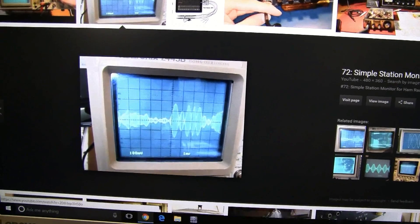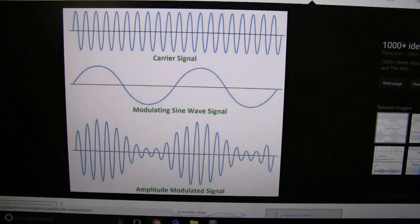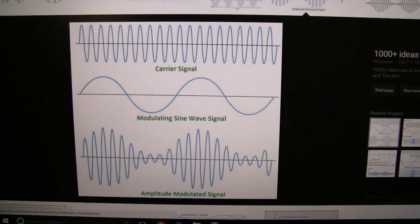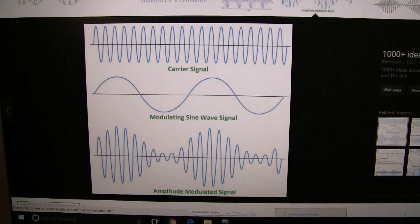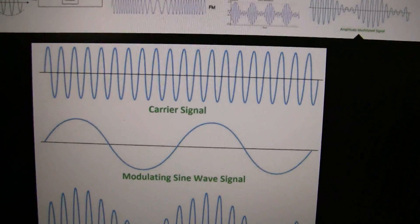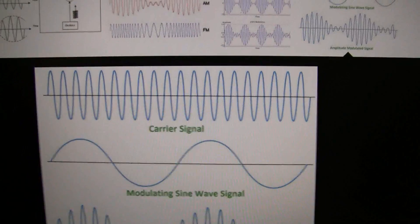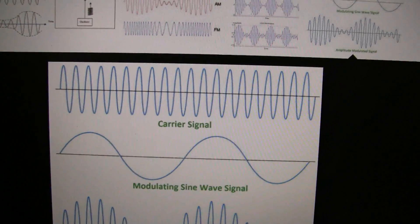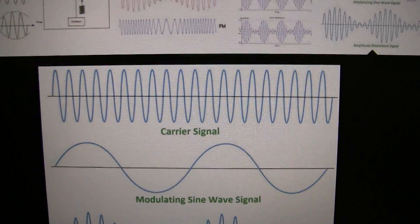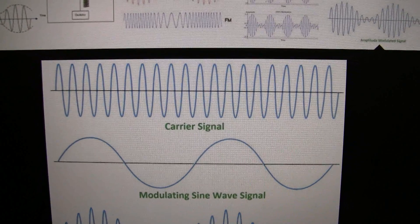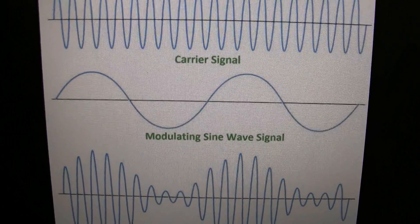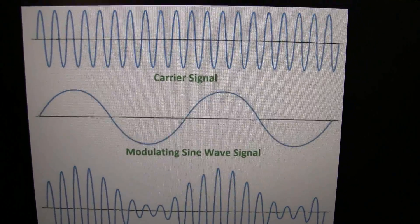First I'm going to talk about AM and what modulation actually means. Modulation, the way I look at it, is a measure of how well your voice is integrated into the carrier signal and then sent out over the air. Your carrier — whatever band you're using for AM — in CB radio, which is what I use, it's a 27 megahertz band. So your carrier signal is some frequency, in this case 27 megahertz, and that is modulated — hence the word modulation — with your voice or your modulating sine wave signal.